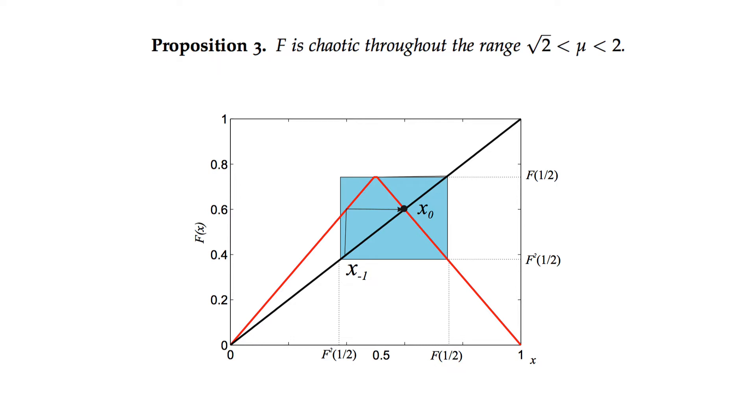In fact, the type notes for this course go through a fairly long and convoluted proof that the map is chaotic for mu between root 2 and 2. I struggled for a while making this video because the proof in the type notes is so long and convoluted. The truth is that there is a much simpler proof that uses the result I showed in the last video regarding period 3 implies chaos. So instead of following the type notes, I'm going to go through this much shorter proof.